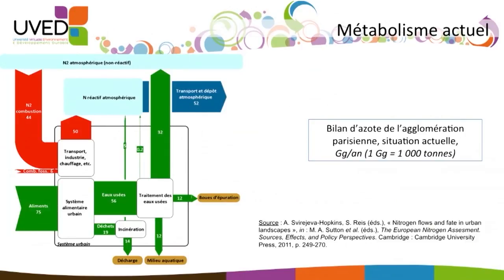Another part of nitrogen that gets to cities is contained in wastewater, because animal and human metabolism rejects a large quantity of nitrogen that was ingested. Nitrogen ends up in the sewers or in water treatment plants when they exist, which they actually do in Paris. Water treatment plays a great role because it turns reactive nitrogen into non-reactive nitrogen, which is fed back into the atmosphere.